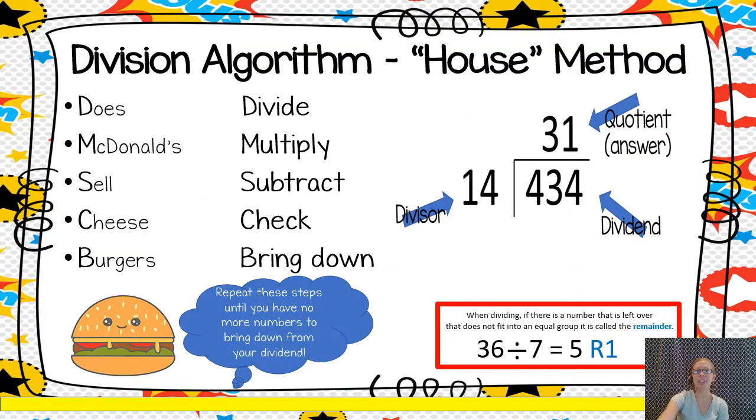So remember, the division algorithm is like steps, taking steps to solve a problem. And we can use this silly little memory trick to help us remember the steps. Does McDonald's sell cheeseburgers? Five steps here. And the first letter of each of those silly words helps us remember a step.